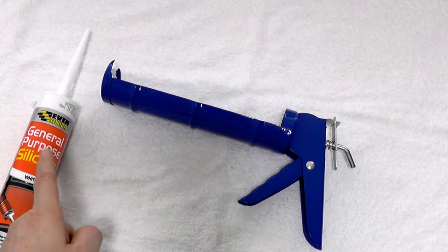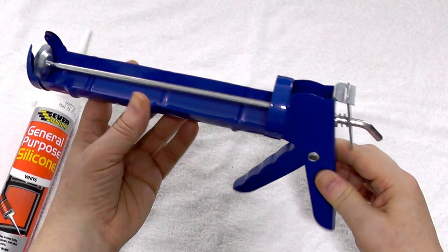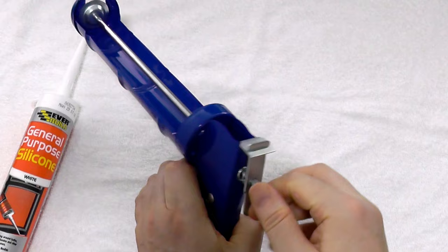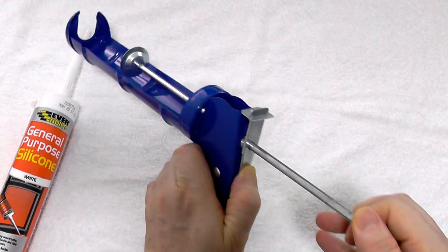How do you get the plunger to move back on this generic cheap caulking gun which is very common? The answer is you press down that lever at the back, the release trigger. There you go.